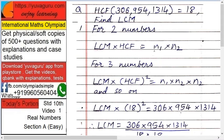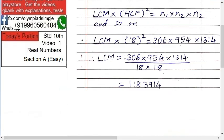And so on, right? Remember this basic rule. Okay, so now it's easy. So LCM into what is given: HCF is 18, so 18 squared equals 306 × 954 × 1314. Right, so just substitute the value of 18.